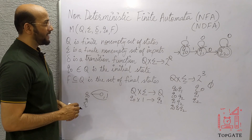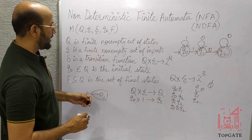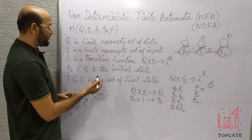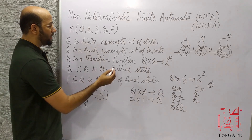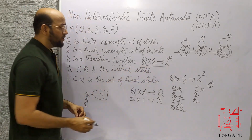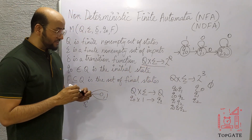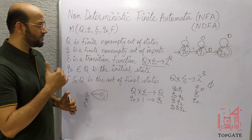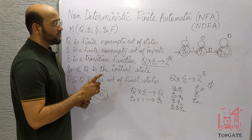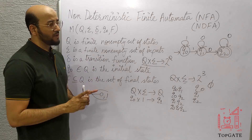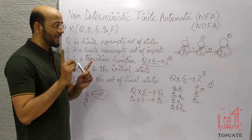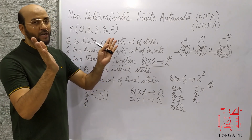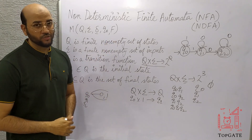This is NFA, which has the same five tuples as DFA. The only difference between NFA and DFA is the transition function. In DFA, for a single input we have a single path. In NFA, for a single input we have multiple paths. Thank you so much.